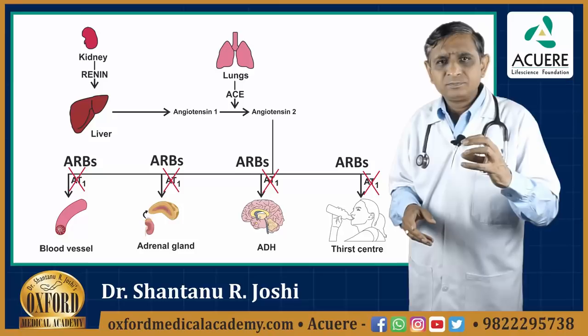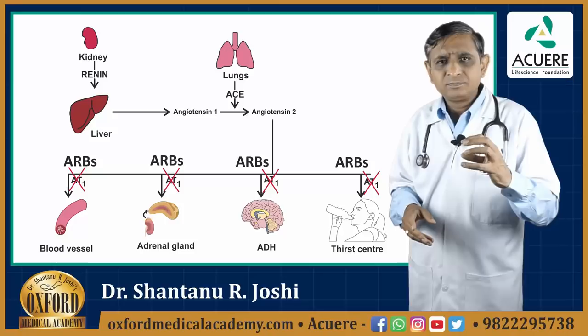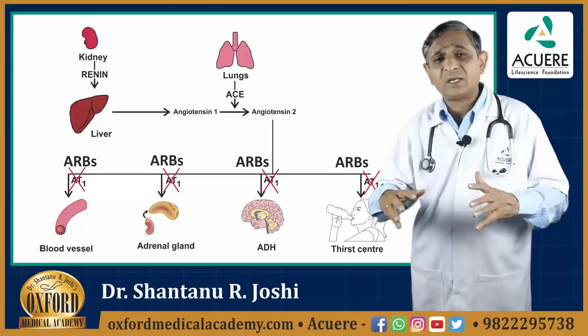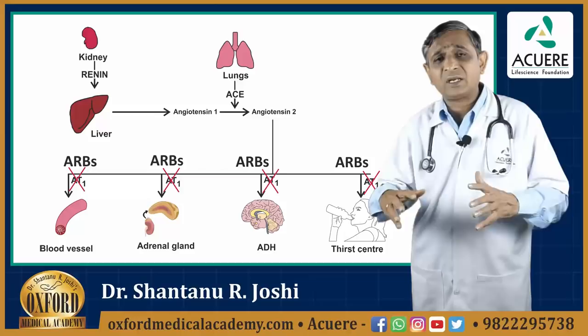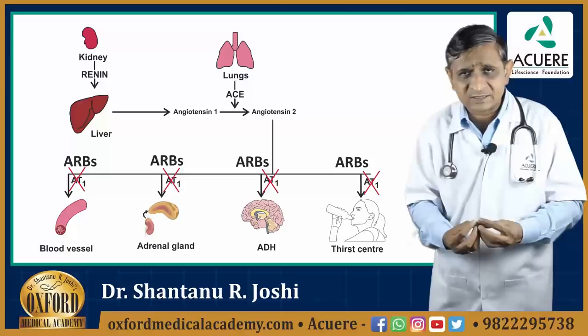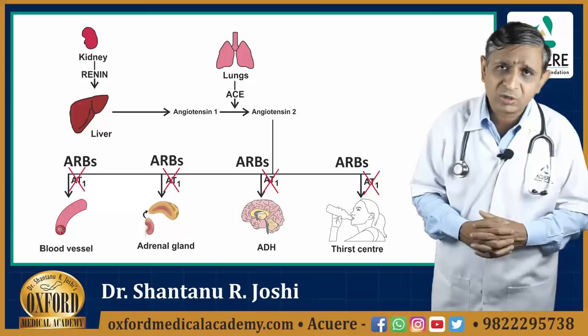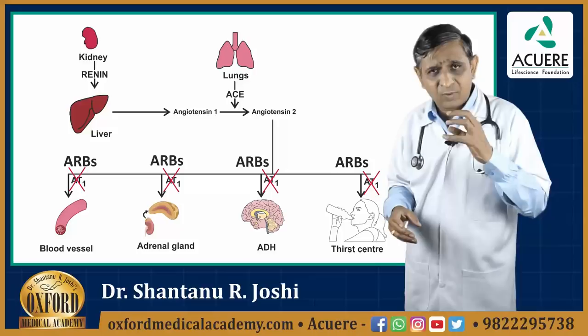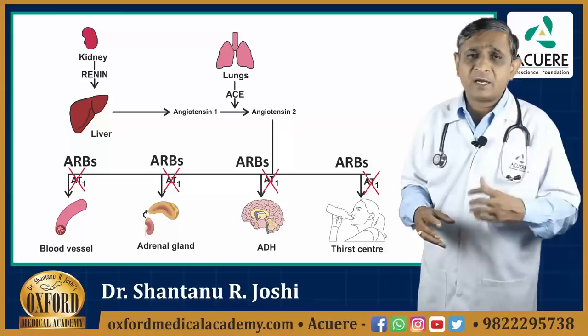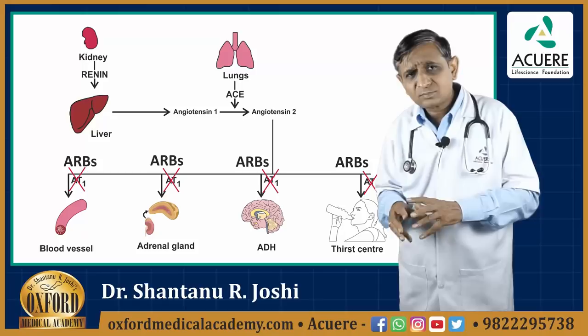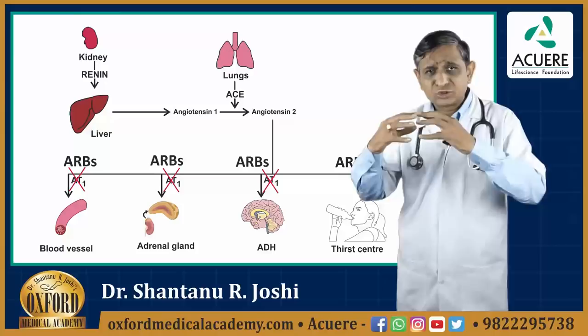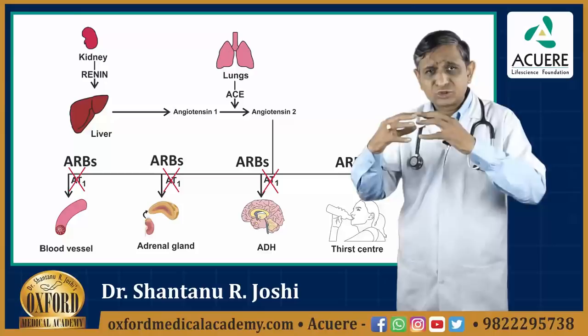When we block the AT1 receptors in the adrenal cortex, there will be reduction in aldosterone secretion. When aldosterone secretion is low, there will be no retention of sodium and water — rather, there will be loss of sodium and water by the kidney. Blood volume reduces, cardiac output reduces, and there will be reduction in systolic blood pressure. If you block AT1 receptors in the posterior pituitary, it will reduce ADH secretion. Again, there will be loss of sodium and water, blood volume decreases, cardiac output decreases, and systolic blood pressure will decrease.